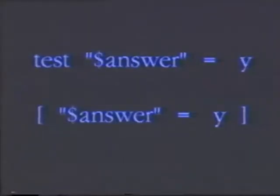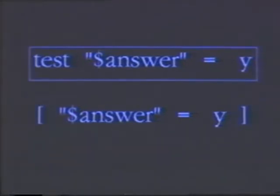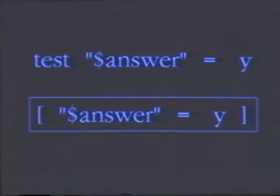I need to say something about the format of the test command. Because it's common to control a while loop with a test command, the people that designed Unix decided to provide an alternative format to make it look more like traditional programming languages. You can use the word test to run the test command, or you can use an opening square bracket as long as you put a closing square bracket at the end of the test command line. Instead of writing test, you could write it with square brackets — the command does exactly the same thing, it just looks different, and you need to be aware of the different formats.